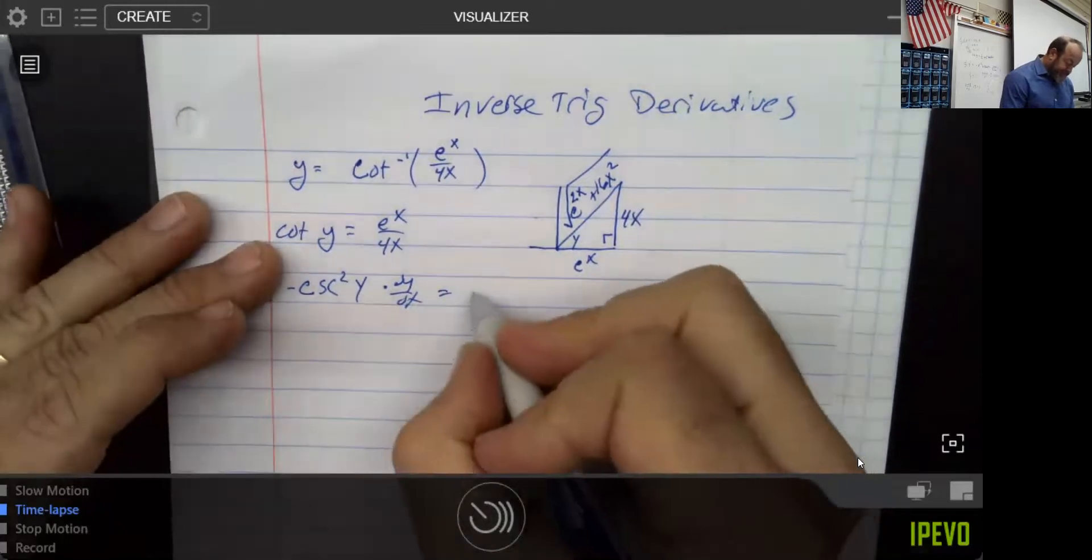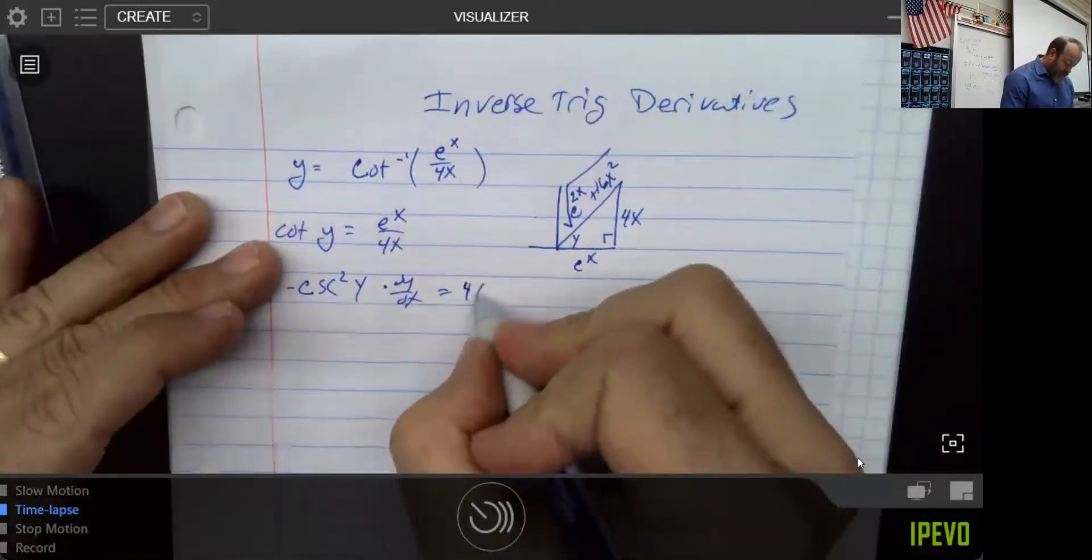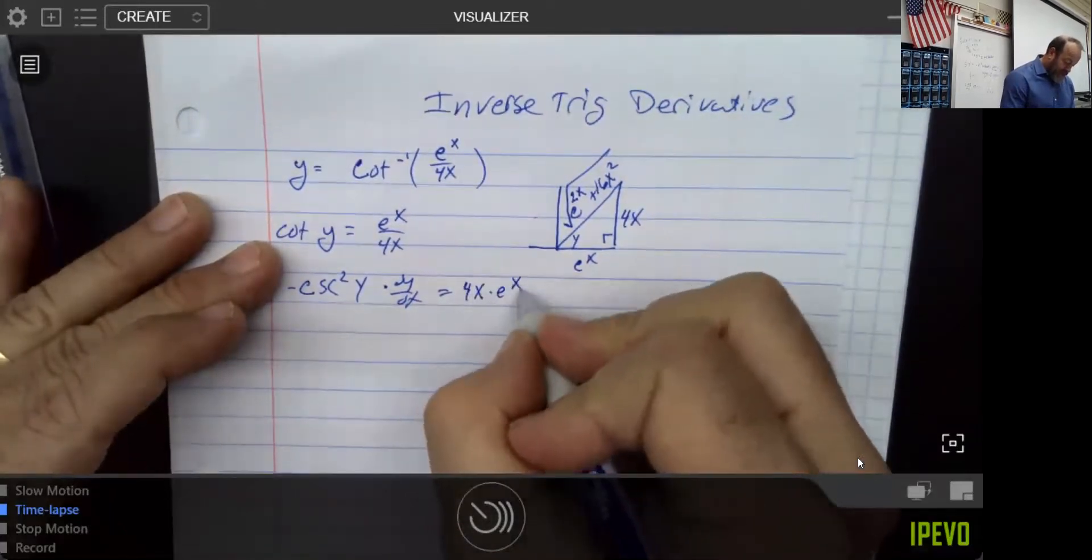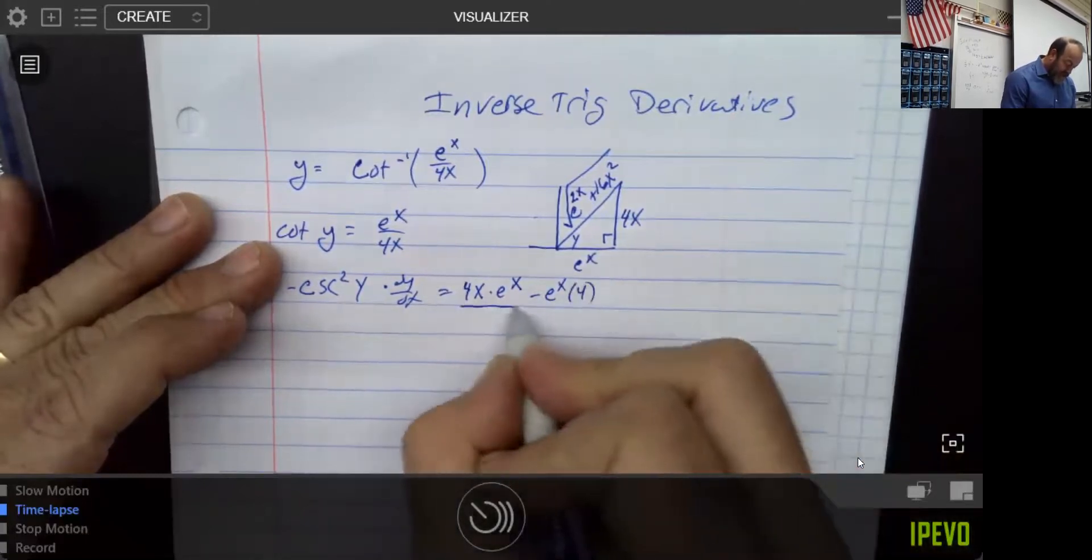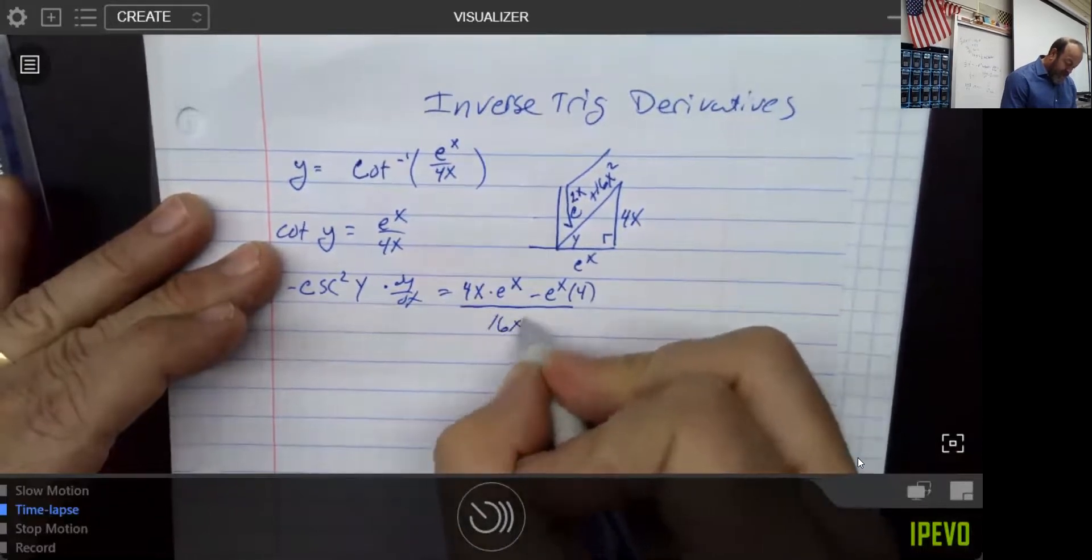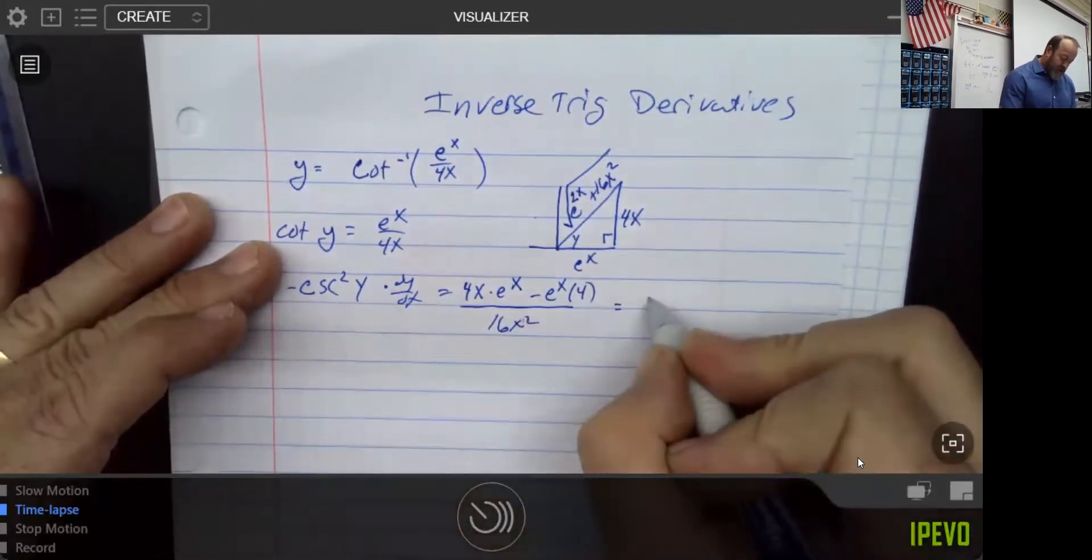Now, we come over to this other one, and we have a little bit more work to do. We have a low d high. Here's my low, d high, minus my high, d low, and I square the bottom, and away we go.